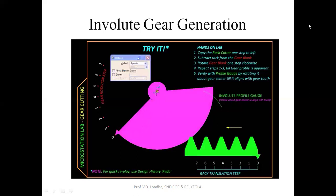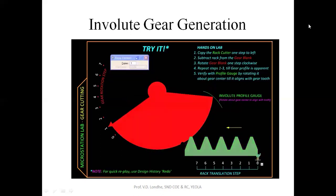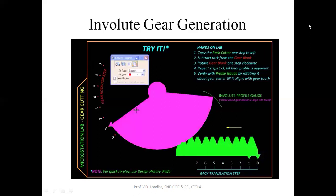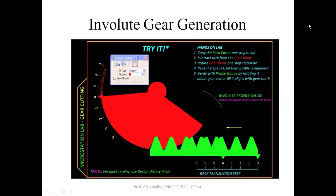So we start by first giving a rotation to the blank, then we are going to copy the rack and go one step ahead. Then finally we are going to subtract from the blank the copy of the rack, and we'll be repeating this process over and over again. So we rotate the blank, advance the rack cutter and make a cut. Again we rotate the blank, advance the cutter and cut it. Rotate the blank, advance the rack cutter and cut.